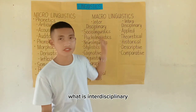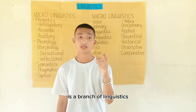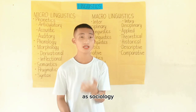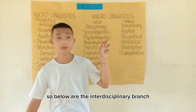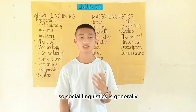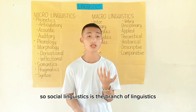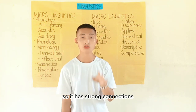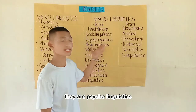Interdisciplinary macro linguistics is a branch of linguistics that deals with the study of linguistics in relation to other disciplines such as sociology, psychology, geography, and others. Sociolinguistics is the study of the relationship between society and language — the branch of linguistics that deals with the effect of society on language. It has strong connections with anthropology, culture, and society.